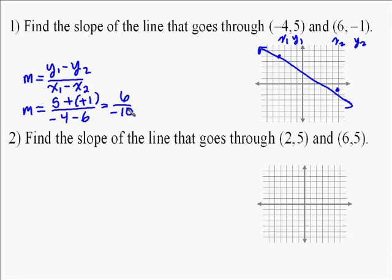Now you can simplify this by asking what number goes into both those. Well, 2 goes into 6 and 2 goes into 10, so it's going to be a negative 3 fifths. So the slope of that line is negative 3 fifths.